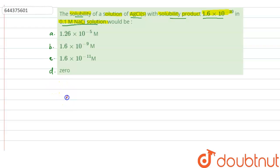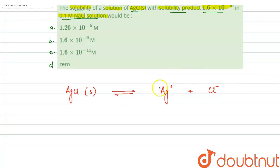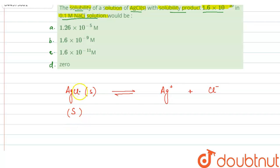First, we take AgCl, which is a solid. When it dissociates, it forms Ag⁺ ion and Cl⁻ ion. Suppose the solubility of AgCl is s moles per liter. After dissociation, one mole of AgCl produces one mole of Ag⁺ and one mole of Cl⁻. So if solubility of AgCl is s moles per liter, the concentration of Ag⁺ and Cl⁻ ions will also be s.